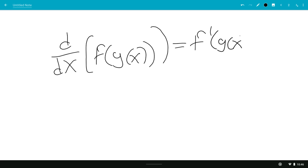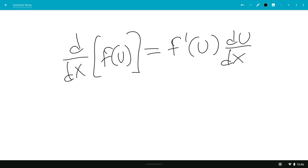So if we have a function, if you have the derivative of f of g of x, this will be f prime of g of x times the derivative of the inside, which is g prime of x, which is also dg dx.